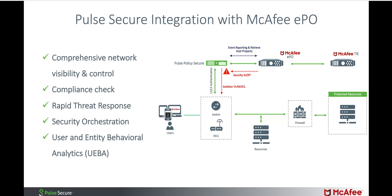Pulse Secure and McAfee offer bidirectional integration to improve endpoint security. It offers alert-based admission control where McAfee can send threat alerts to Pulse Policy Secure for compromised devices, and Pulse Policy Secure can take enforcement action at the endpoint level based on threat severity.